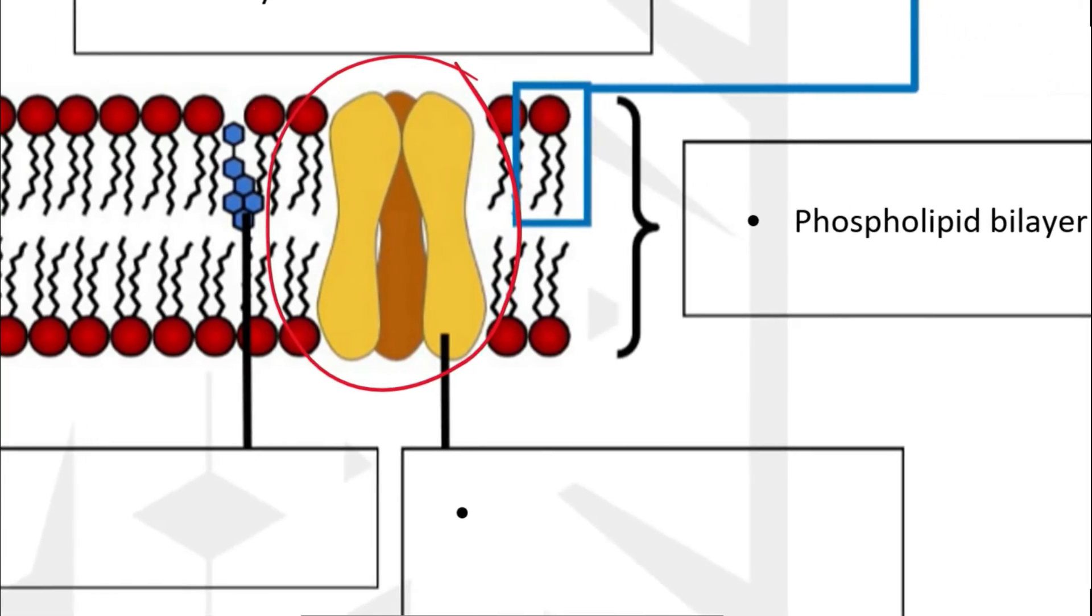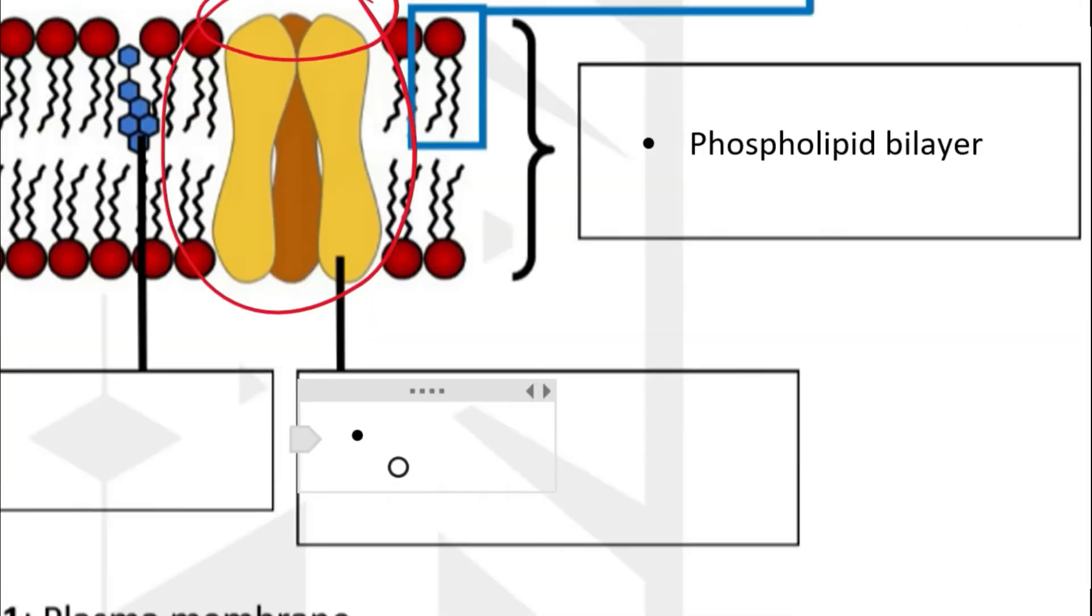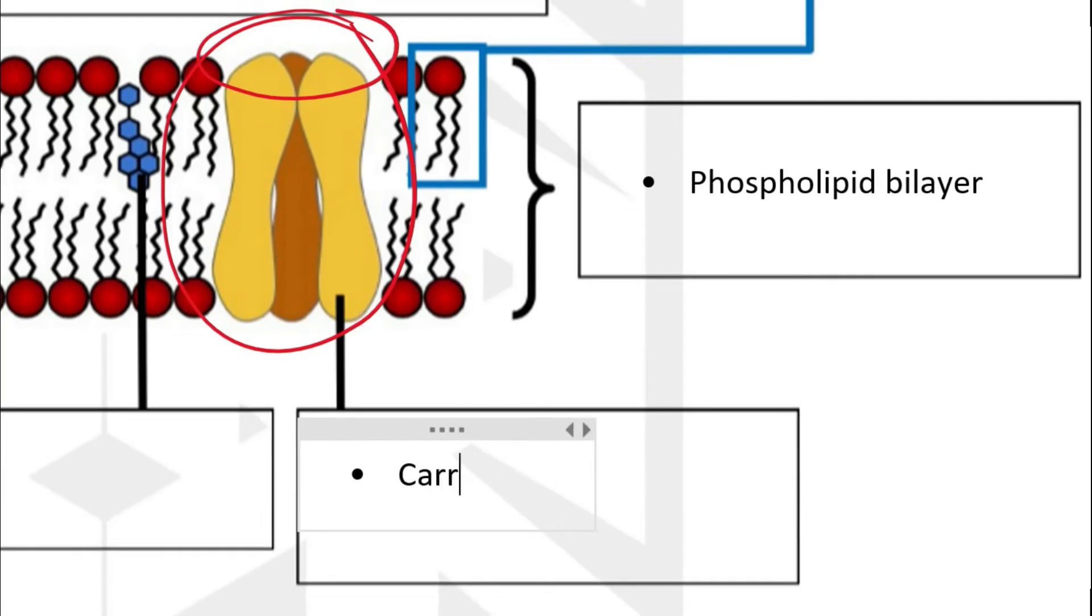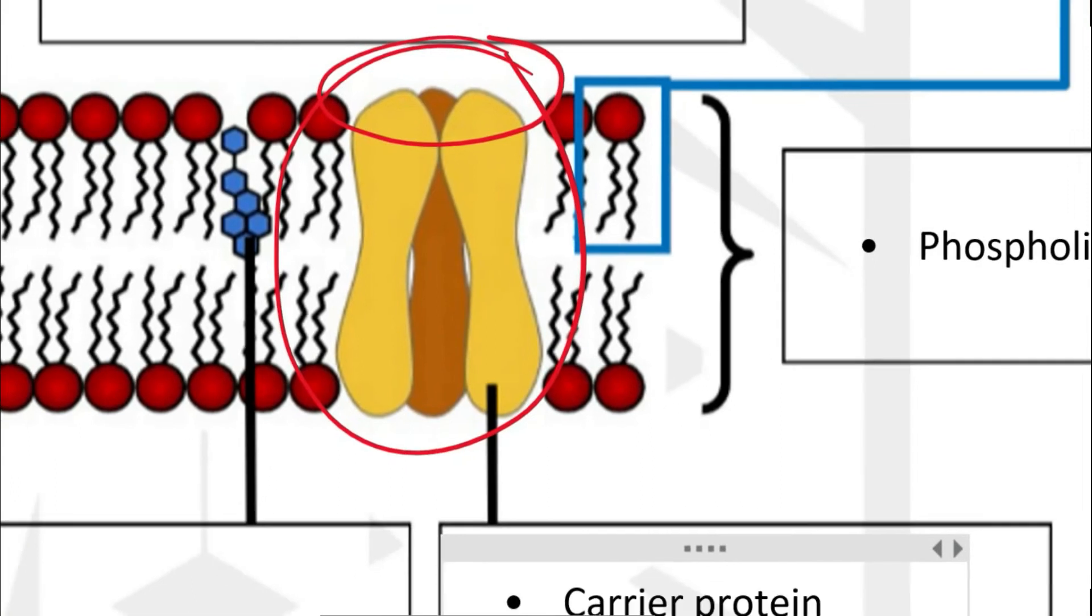And on the right here, you can see one end is closed. This protein is known as the carrier protein. This is because it carries substances across the plasma membrane. But that is for another video.